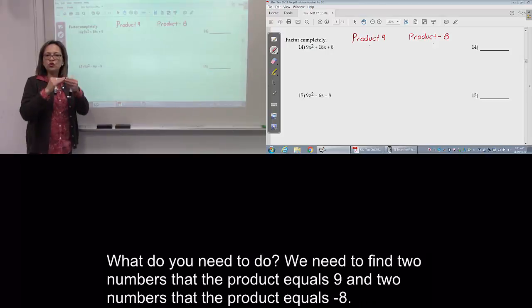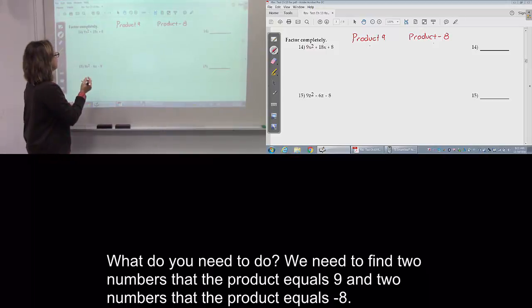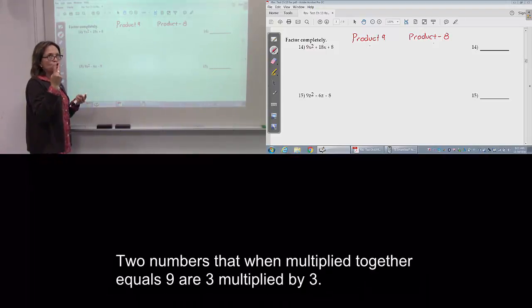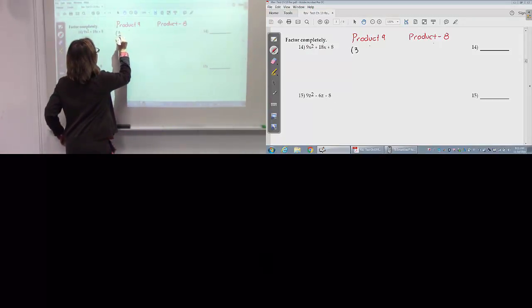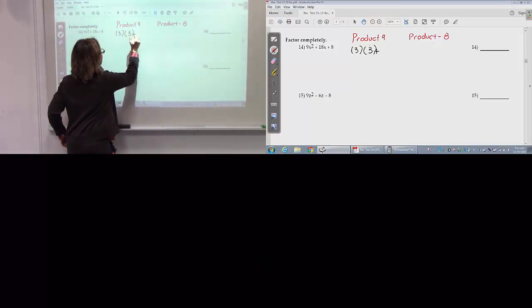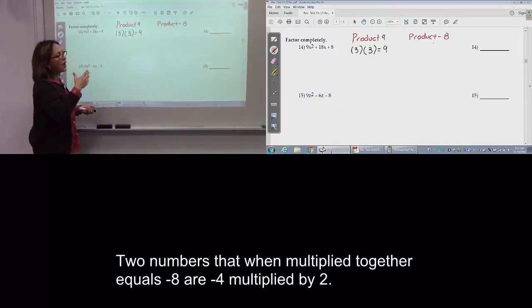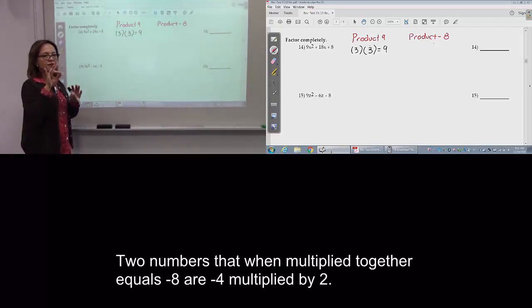What to do? We need to find two numbers, the product equals 9, and two numbers, the product equals negative 8. Two numbers times equals 9 are 3 and 3, and two numbers times negative 8 are negative 4 and 2.